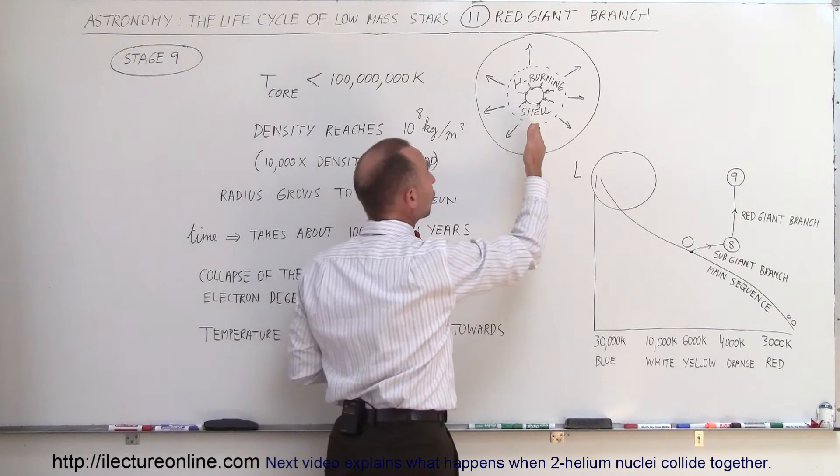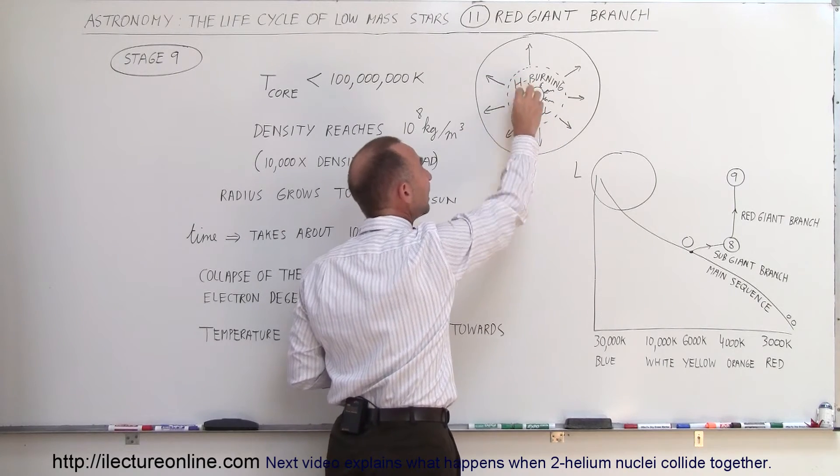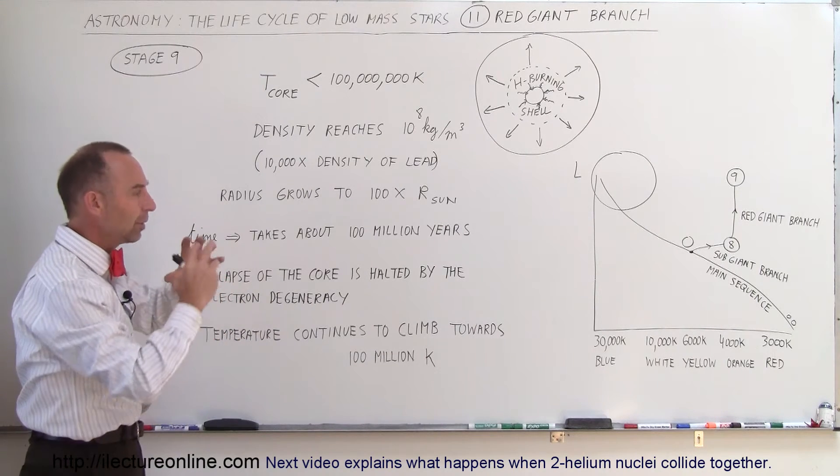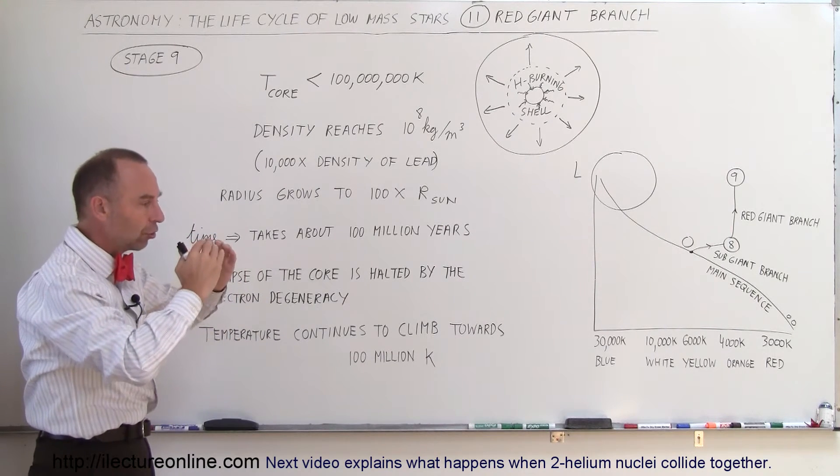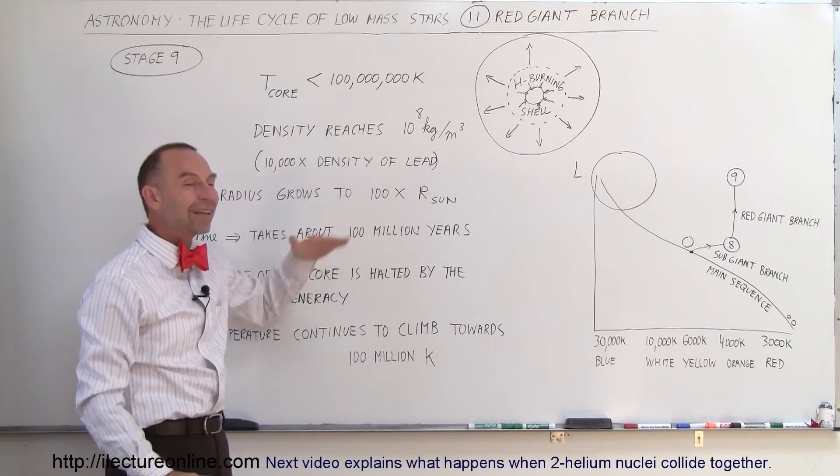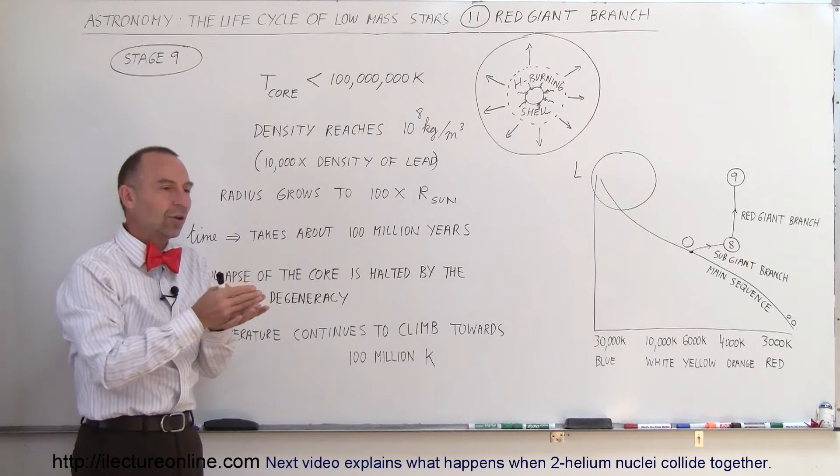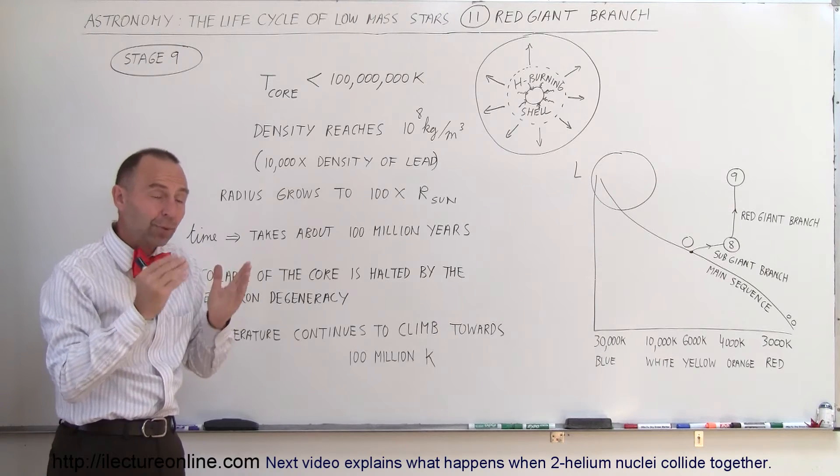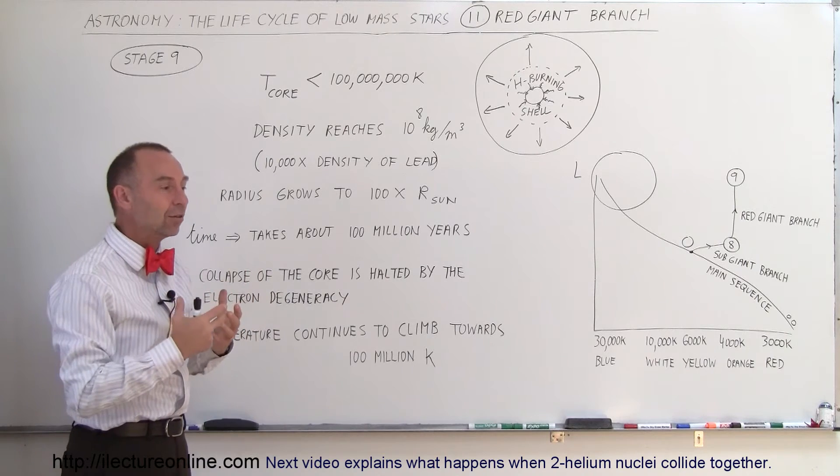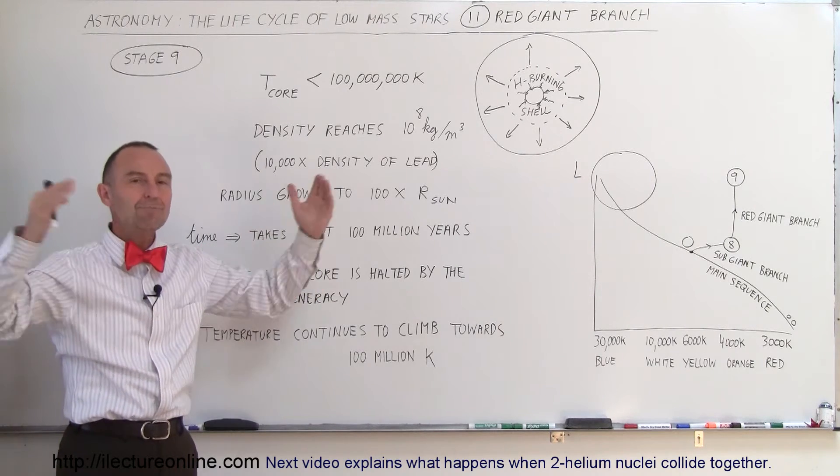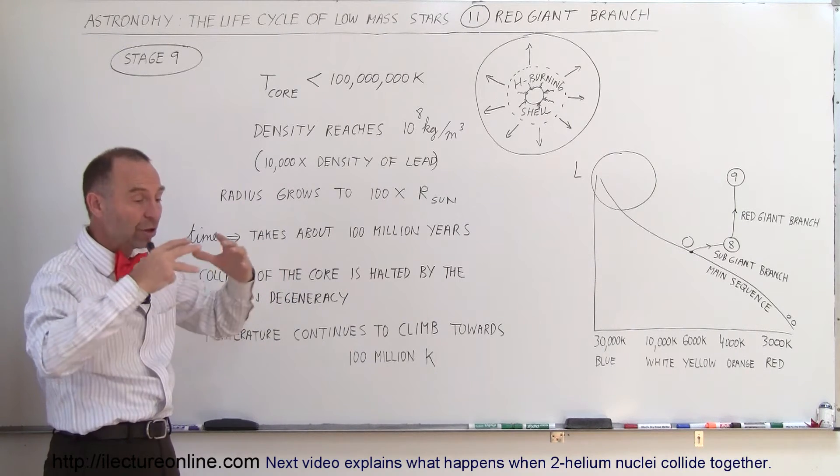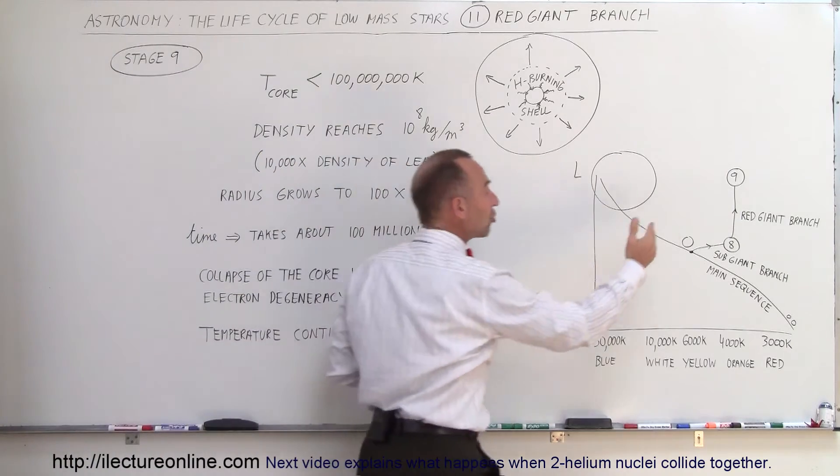In addition to that, radiation is also pointing towards the core, and the core continues to heat up because of the fusion process that's happening around the core. And temperatures keep going up, the collapse has halted, the star continues to grow until the radius of the star is now 100 times the original radius. And that is called the red giant branch.